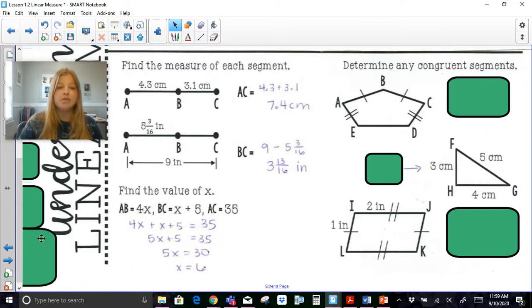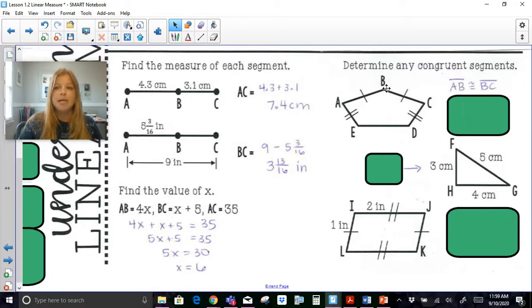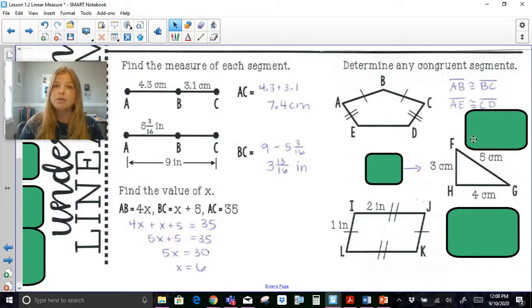Now congruent segments on a figure are always marked by the same amount of tick marks. So when I see a one tick mark here and a one tick mark here this would tell me that the segment AB is congruent to segment BC. So I would be able to say segment AB, notice I have the segment bar notation, is congruent to segment BC. Now before I did also mention that if segments are congruent then their measures are equal, so I could actually also then say AB is equal to BC. And when I say equal we don't use the word segment and we don't use that bar notation. I see sets of two tick marks so I could say that segment AE is congruent to segment CD which would then also let me say that AE is equal to CD.